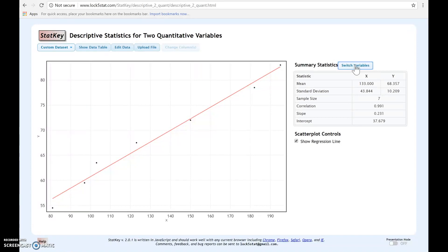But other than that, this is how you make a scatterplot in StatKey. This is how you get all of your summary statistics. And you can click here to show the regression line.